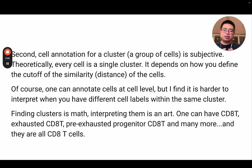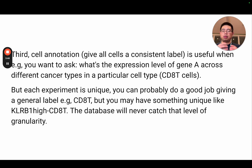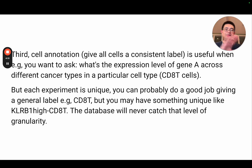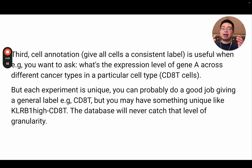In other words, finding clusters is math, but interpreting them is an art. For example, one can have CD8 T cells, exhausted CD8 T cells, pre-exhausted progenitor CD8 T cells, and many more. But in this case, giving all the cells a consistent label is useful when you want to ask questions like: what's the expression level of gene A across different cancer types in a particular cell type, in this case CD8 T cells? So it's useful because you give a consistent label across different datasets. However, usually each experiment is unique — you can probably do a good job giving a general label for CD8 T cells across datasets, but in your own data you may have something really unique like KRV-1 high CD8 T cells, and the database will never catch that level of granularity.